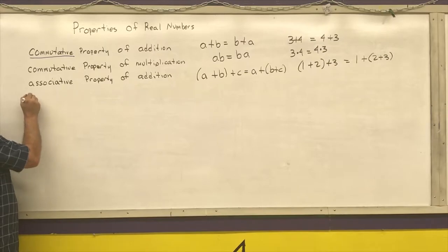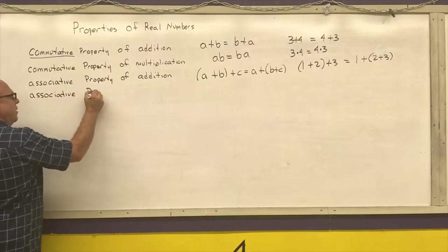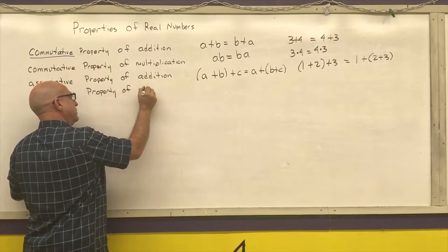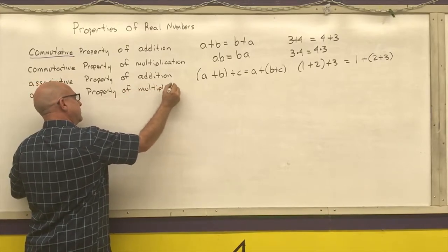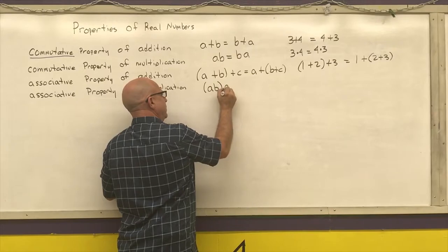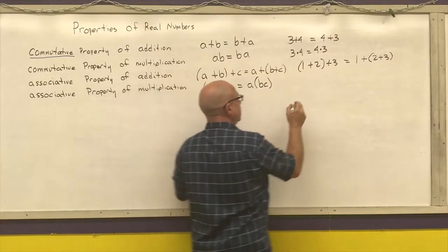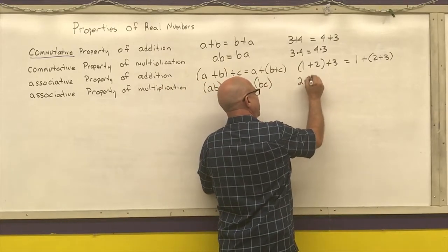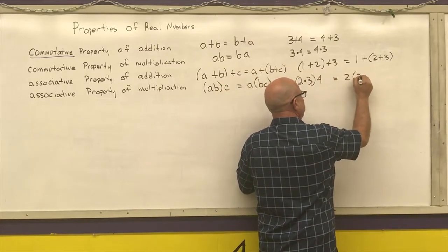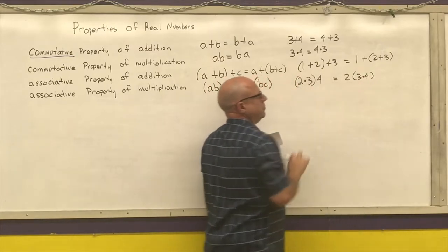I also have the associative property of multiplication, which says that (A times B) times C is the same thing as A times (B times C). 2 times 3 times 4 is the exact same thing as 2 times 3 times 4. 6 times 4 is 24. 2 times 12 is 24.